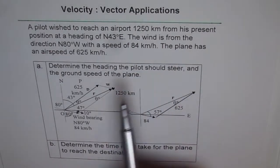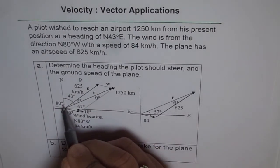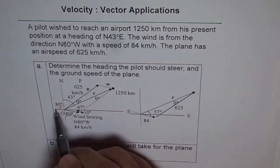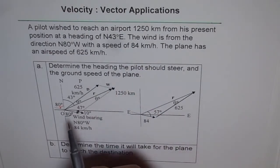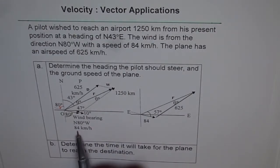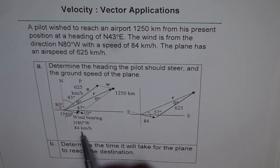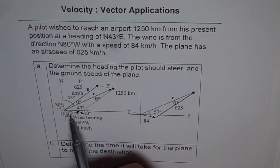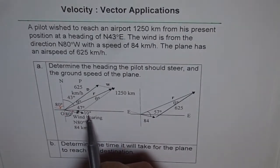The wind is from the direction 80 degrees west of north — from north you go 80 degrees west. That is the wind blowing with a speed of 84 km per hour. As soon as you write 80 here, you know that the small complementary angle will be 10 degrees — that is 90 minus 80 — and that is what I have written here: 10 degrees.